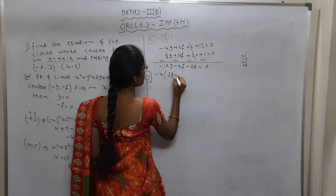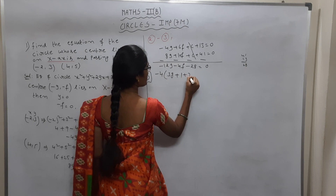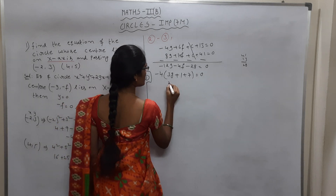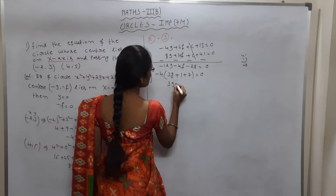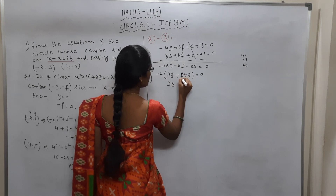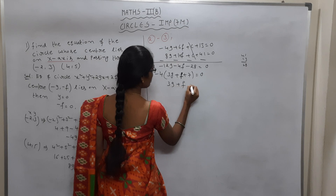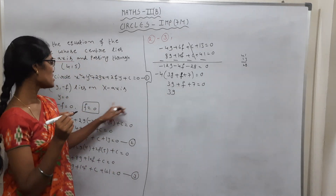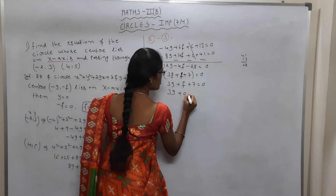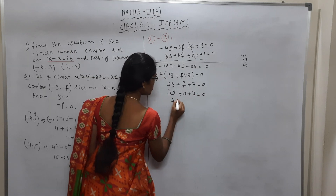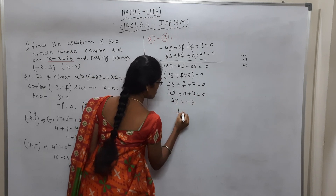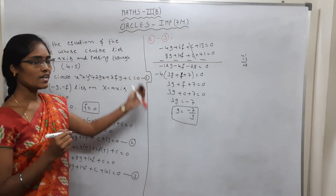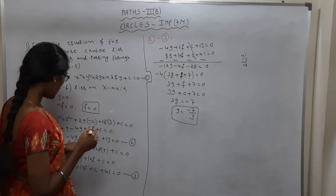After dividing by -4: 3g + f + 7 = 0. Since f = 0, substitute: 3g + 0 + 7 = 0, so 3g = -7, giving g = -7/3.